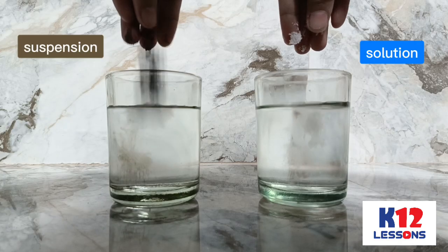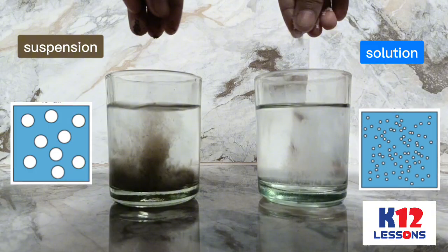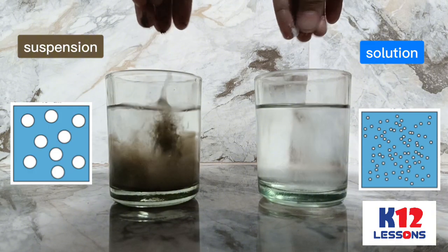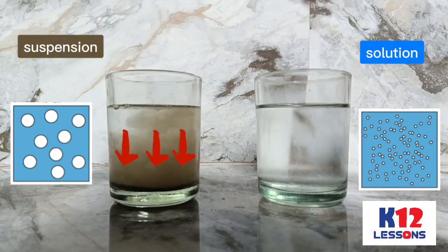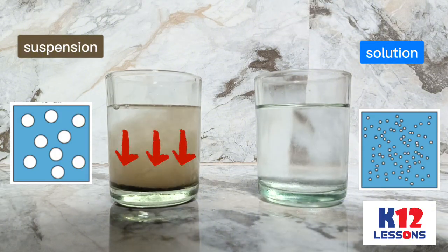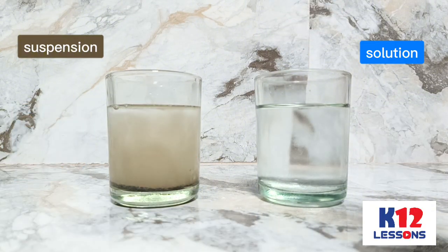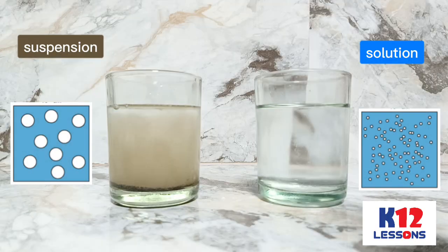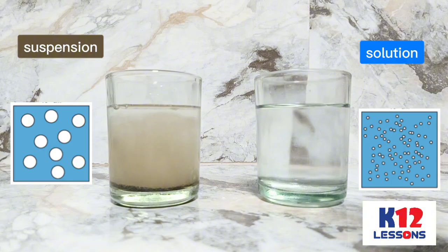A suspension is a heterogeneous mixture in which some of the particles settle out of the mixture upon standing. The particles in a suspension are far larger than those of a solution, so gravity is able to pull them down out of the dispersion medium. The diameter of the dispersed particles in a suspension, such as sand, is typically at least 1,000 times greater than those in a solution.